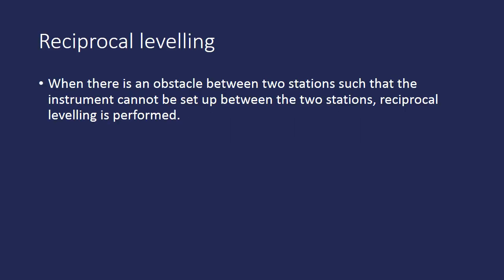Hello and welcome. In this video lecture we are going to discuss reciprocal leveling. Reciprocal leveling is performed when there is an obstacle between two stations such that the instrument cannot be set up between them. It is used in terrain where there is difficulty in setting up the instrument — the obstacle may be a river, a ravine, or any other obstruction.